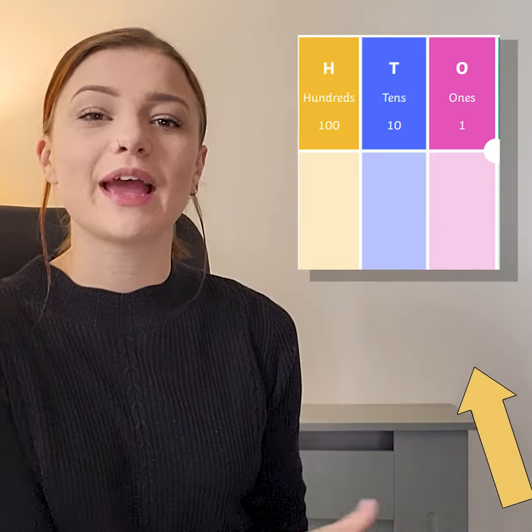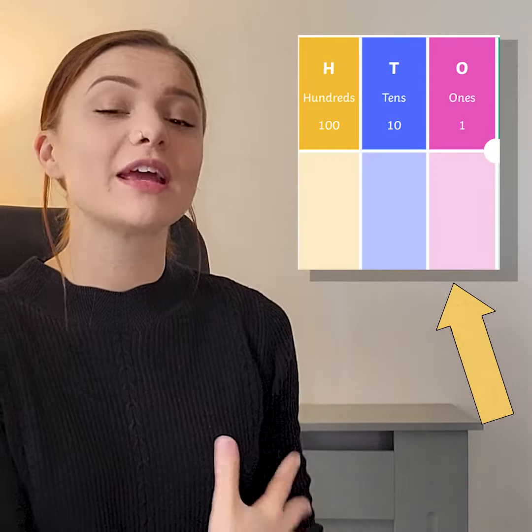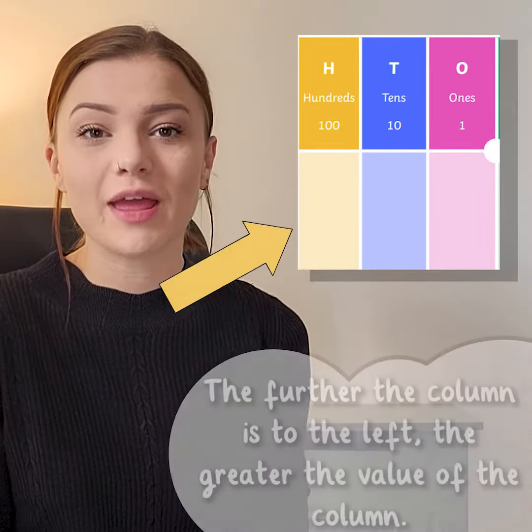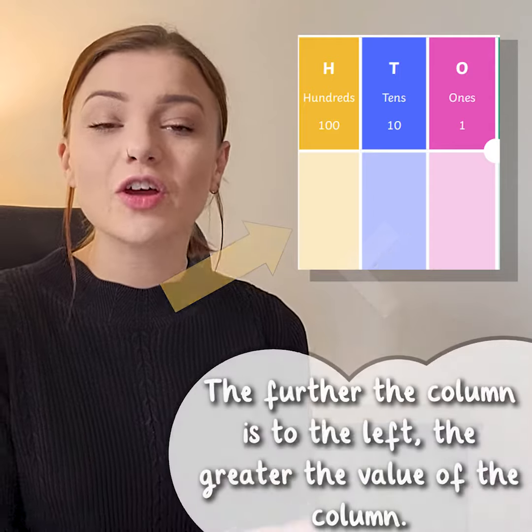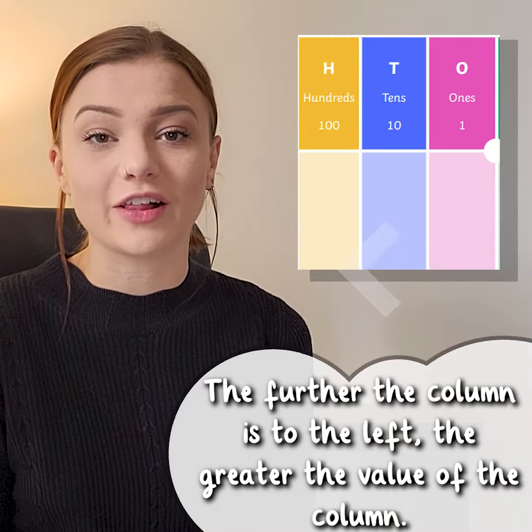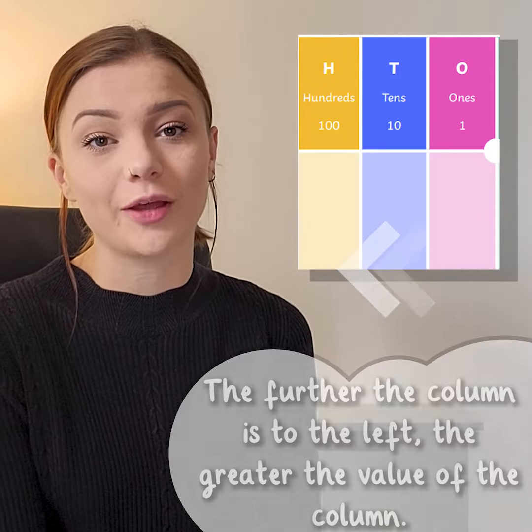Here is a place value chart. As you can see, we have the ones column, the tens column, and the hundreds column. The further the column is to the left, the greater the value of the column.